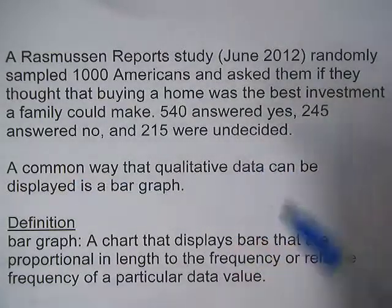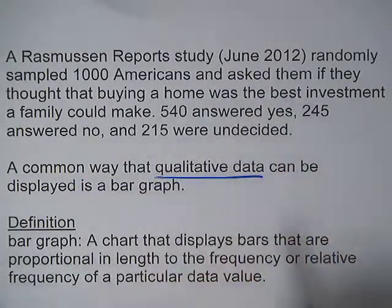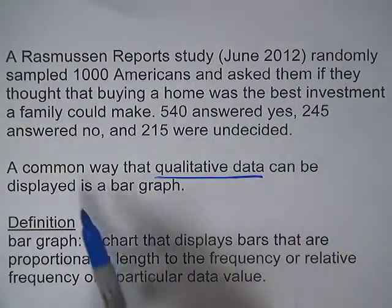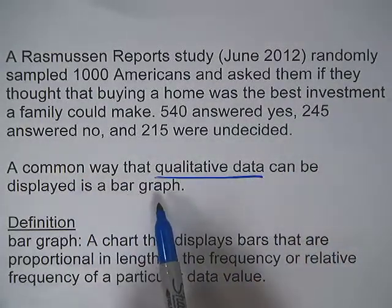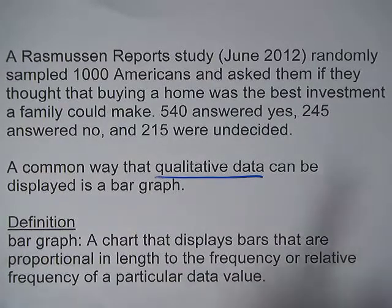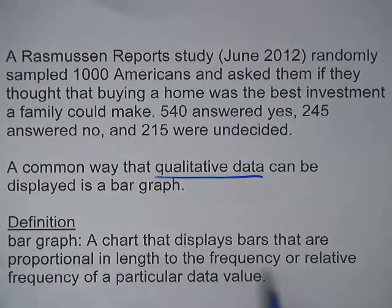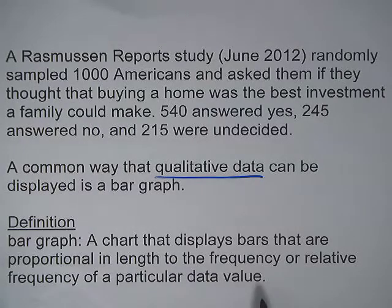A common way that qualitative data can be displayed is by using a bar graph. A bar graph is a chart that displays bars that are proportional in length to the frequency or relative frequency of a particular data value.